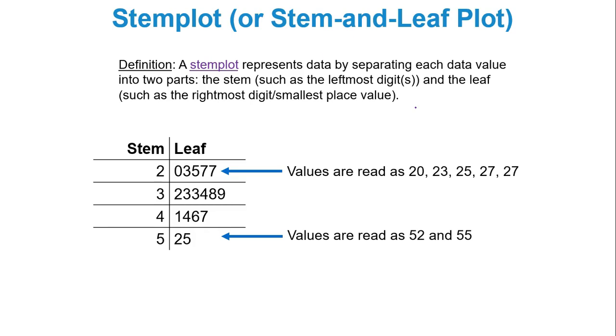A stem plot, or stem and leaf plot, represents data by separating each data value into two parts. You have a stem, which is usually your higher place value or your leftmost digit of a number. And then you have your leaf, which is your smaller place value. So the stem is usually your higher place value, and then your leaf is typically a lower place value.